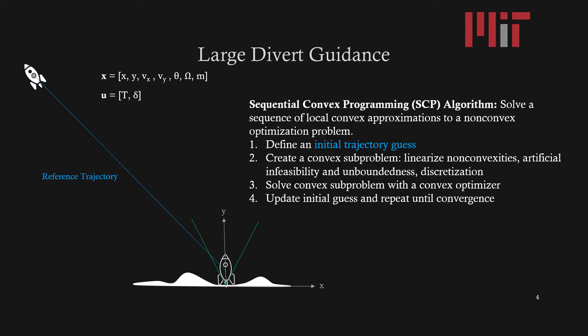State-of-the-art guidance algorithms use sequential convex programming to solve a sequence of local convex approximations to the non-convex guidance problem. This involves first creating an initial trajectory guess, then determining a convex subproblem, and then formulating a solution to the convex subproblem that will be used in subsequent runs of the algorithm as the next initial guess.